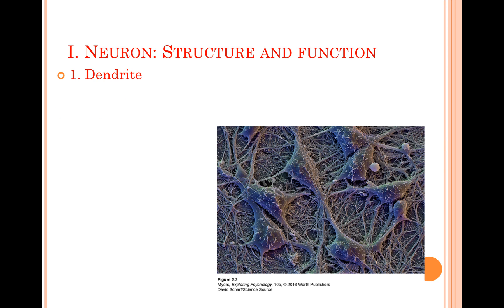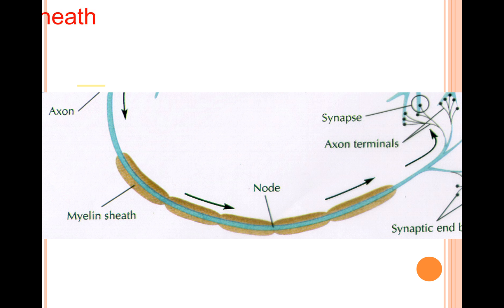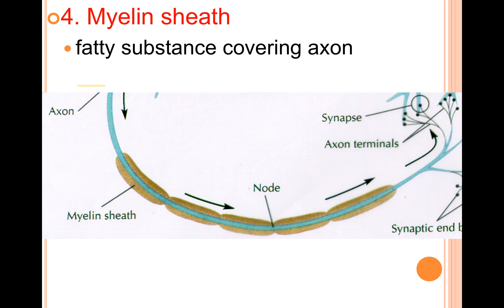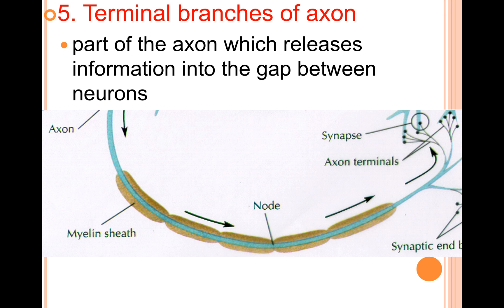The dendrite receives information from other neurons — it's the part of the neuron that receives information. The cell body, or cell soma, with the nucleus at the center serves the same function as any cell body: it's the center of metabolism and nutrition. The axon moves impulses away from the cell body. The myelin sheath is a protective, fatty covering over the axons that increases the efficiency of information passage down the axon. The terminal branches of the axon, at the end of the axon, contain chemical information that's released into the gap between neurons.